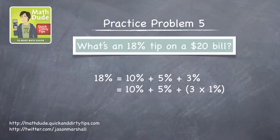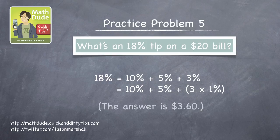And once you've got that, finding 18% is easy. You should get $3.60.